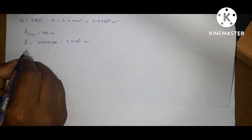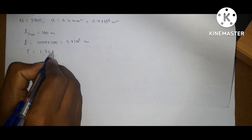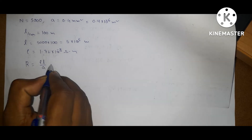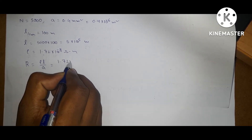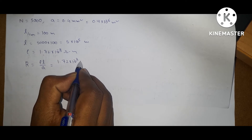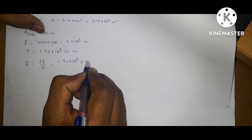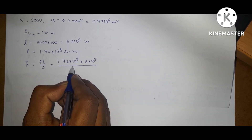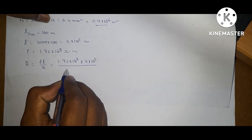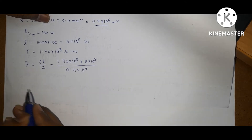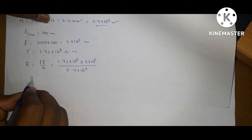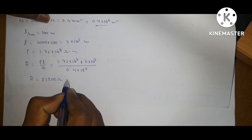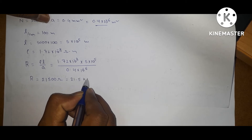Resistivity is given: rho is equal to 1.72 into 10 power minus 8 ohm meter. Using the formula R is equal to rho L by A: 1.72 into 10 power minus 8, into 5 into 10 power 5, divided by 0.4 into 10 power minus 6. Solving this gives resistance of 2150 ohms or 21.5 kilo ohms.